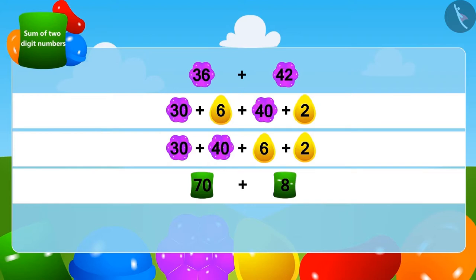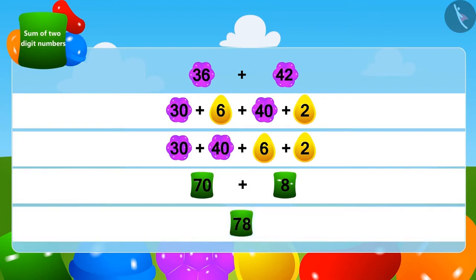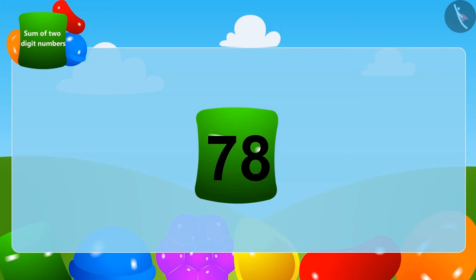Lastly, we will add 8 to 70 and get 78. Yes, the crow has collected a total of 78 stones.